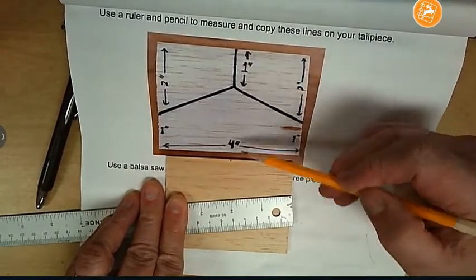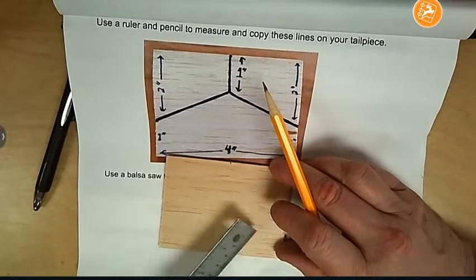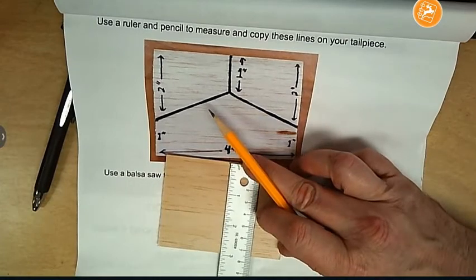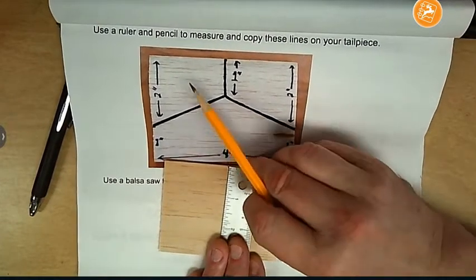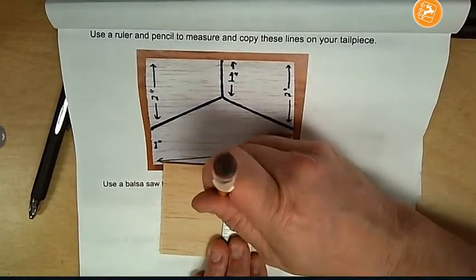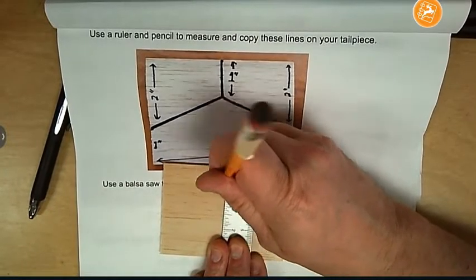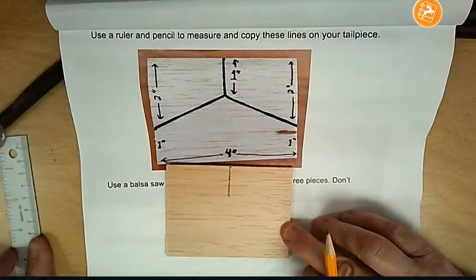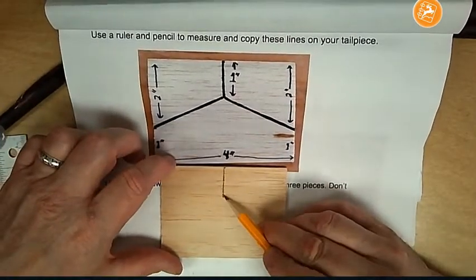This shows me that there's a line going down one inch from that point. So if I kind of use my edge of my ruler against there to make sure I'm doing it nice and straight and draw down one inch, I'm not trying to go through my balsa yet, I'm just drawing a nice line that I can see. So there's a one inch long line just like it did there.